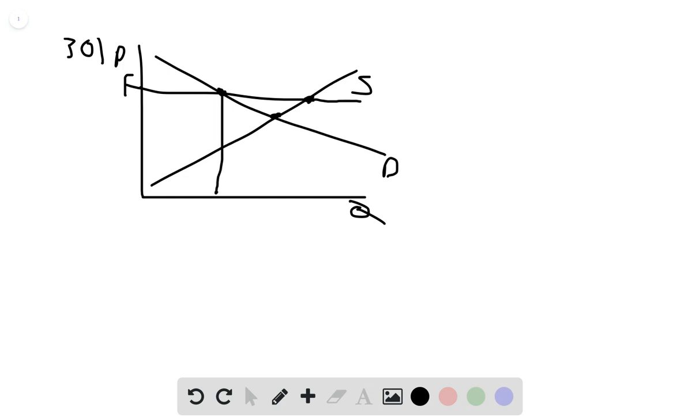So quantity demanded has fallen. Quantity demanded is lower. You see it went from this equilibrium to this equilibrium. Now quantity supplied has gone up. It went from this equilibrium to this equilibrium.